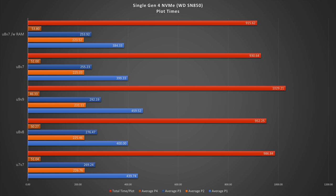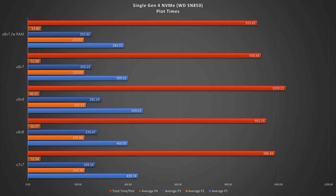My main interest right now is to see how it compares with an NVMe, so I went ahead and conducted new tests just to make sure that the system was exactly the same. Here are the test results for the single NVMe — it is a Western Digital SN850, 2TB in size — and the results that I'll be comparing the SAS 3 SSD to are going to be the U8 V7 at 930 seconds.